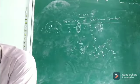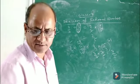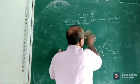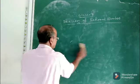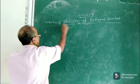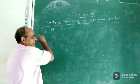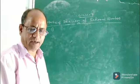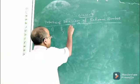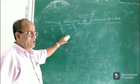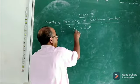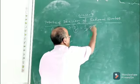Now we will discuss some properties of rational number division. Let us see what the different properties are. Suppose I take 2 by 5 divided by 4 by 5. If you divide this rational number by this rational number, it will be 2 by 5 multiplied by the reciprocal of 4 by 5, which is 5 by 4.